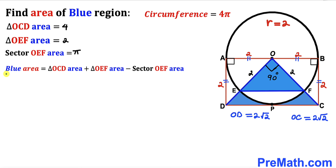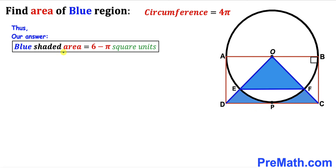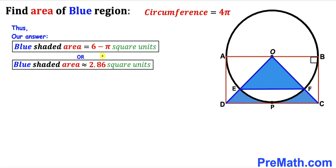Recalling our equation: blue shaded area = area(OCD) + area(OEF) − sector area(OEF). Substituting: 4 + 2 − π = 6 − π. Thus the area of the blue shaded region is 6 − π square units, which is approximately 2.86 square units. Thanks for watching and please subscribe for more exciting videos!